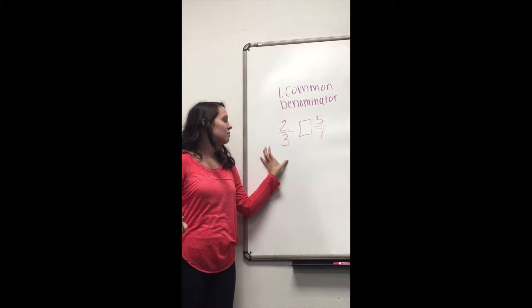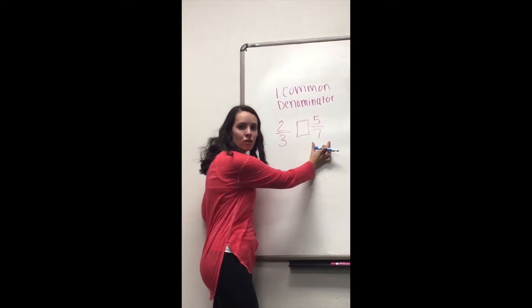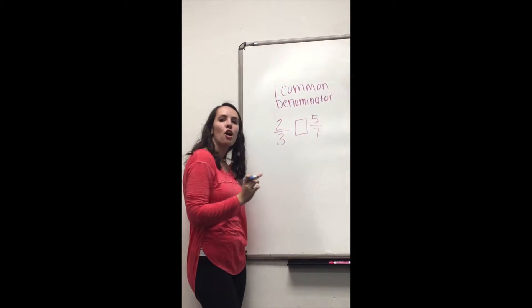And what we're going to need to find is a number that both 3 and 7 will go into, since these are our two denominators. The number for our purpose would be 21.